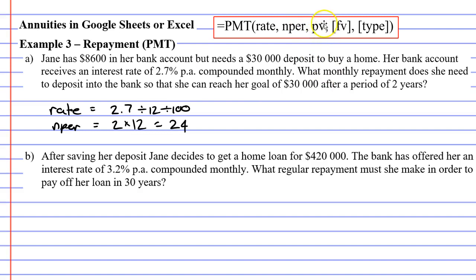Next, we want our present value. Our present value, or PV, is going to be $8,600, because this is the amount of money that she starts with in her bank account.